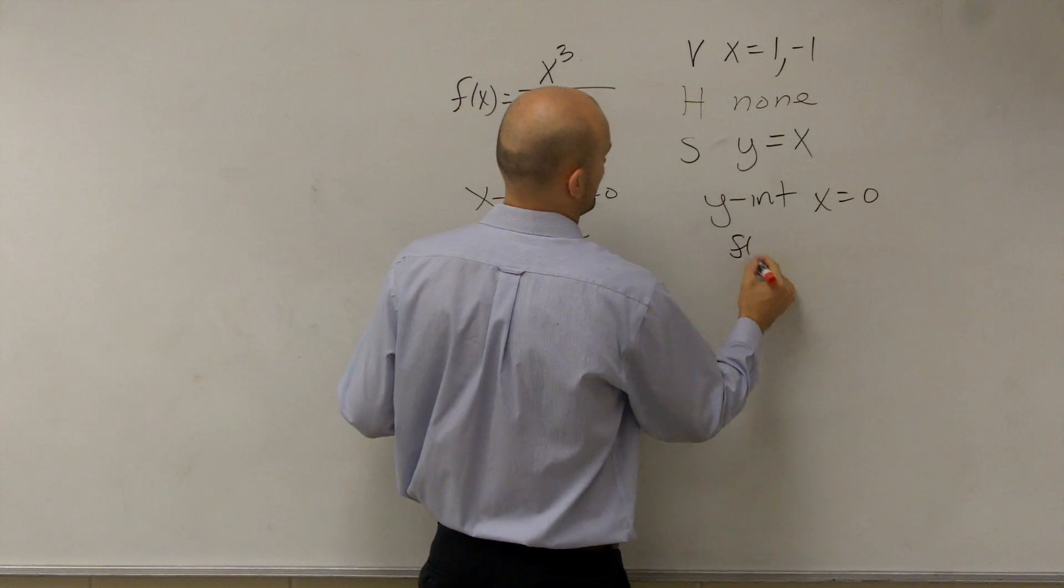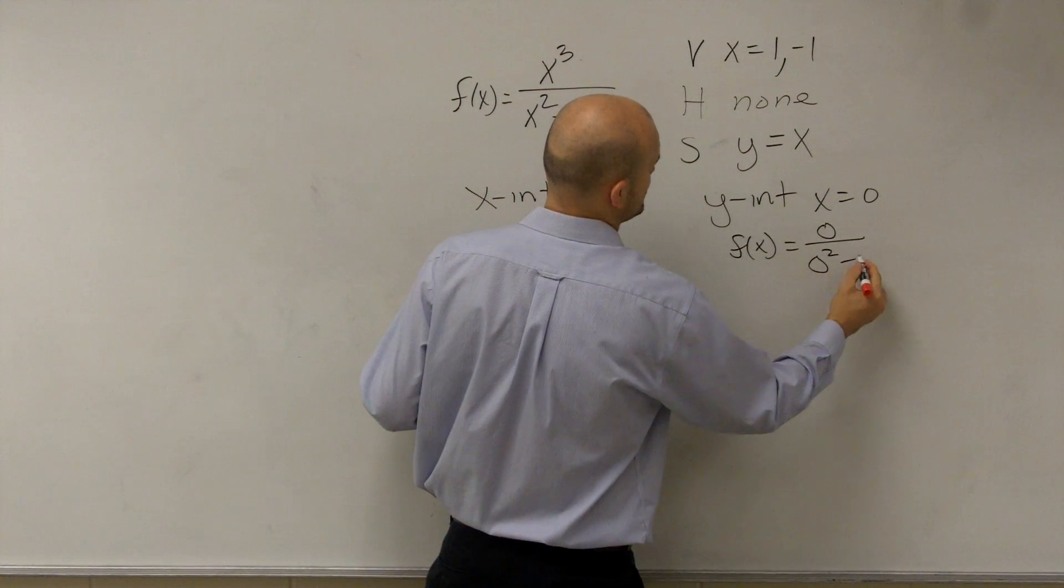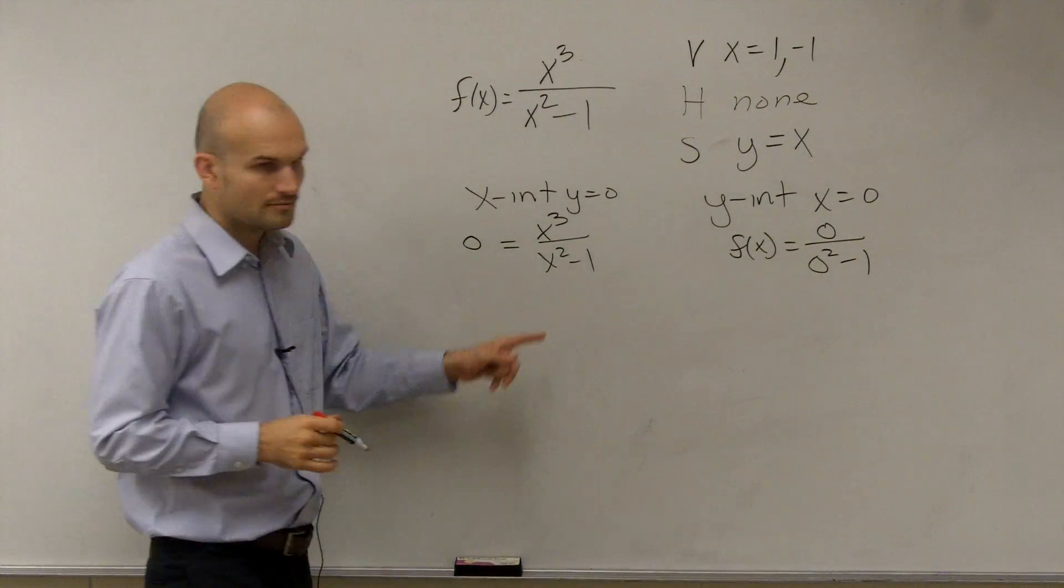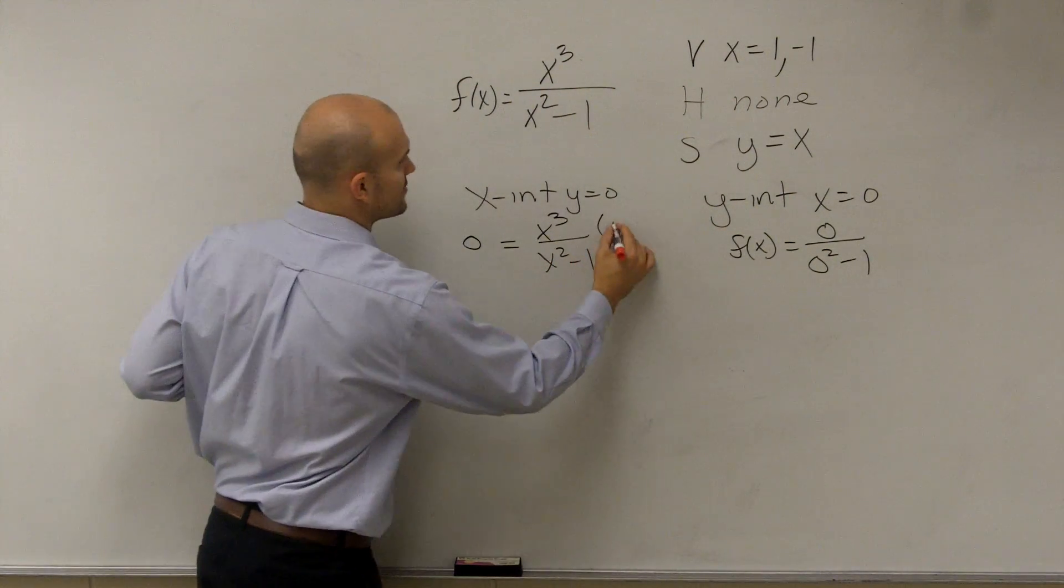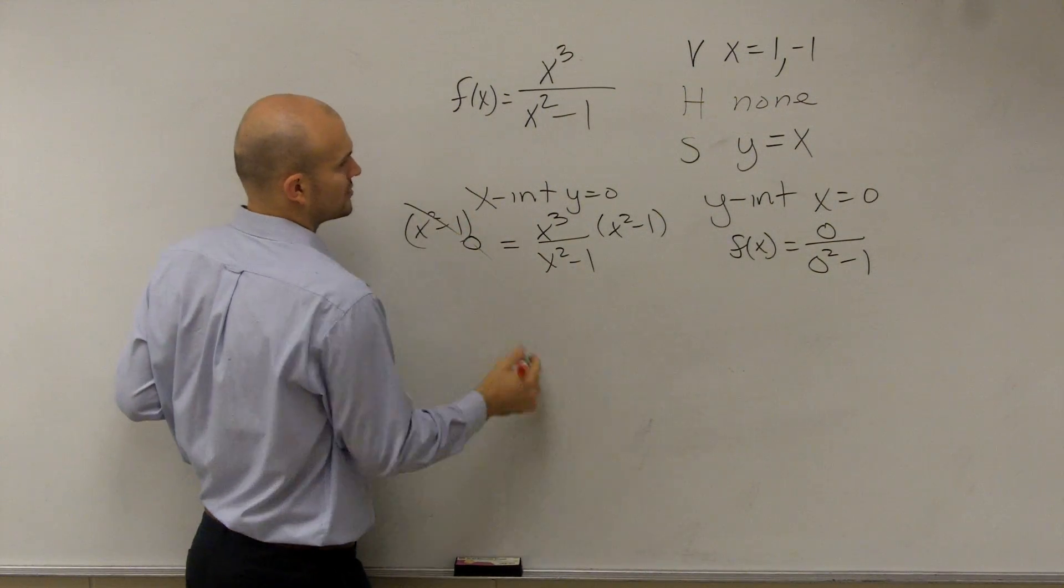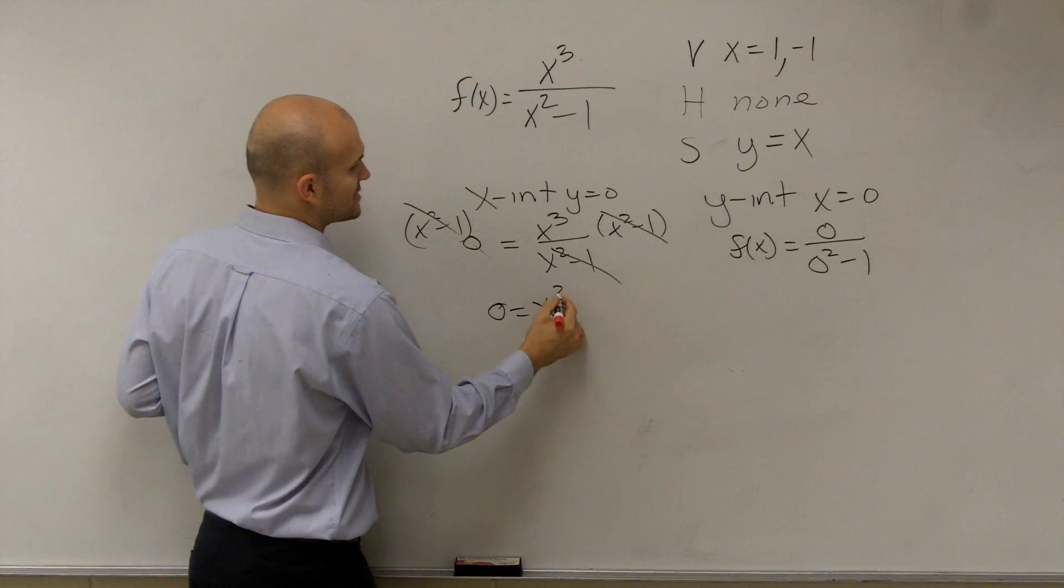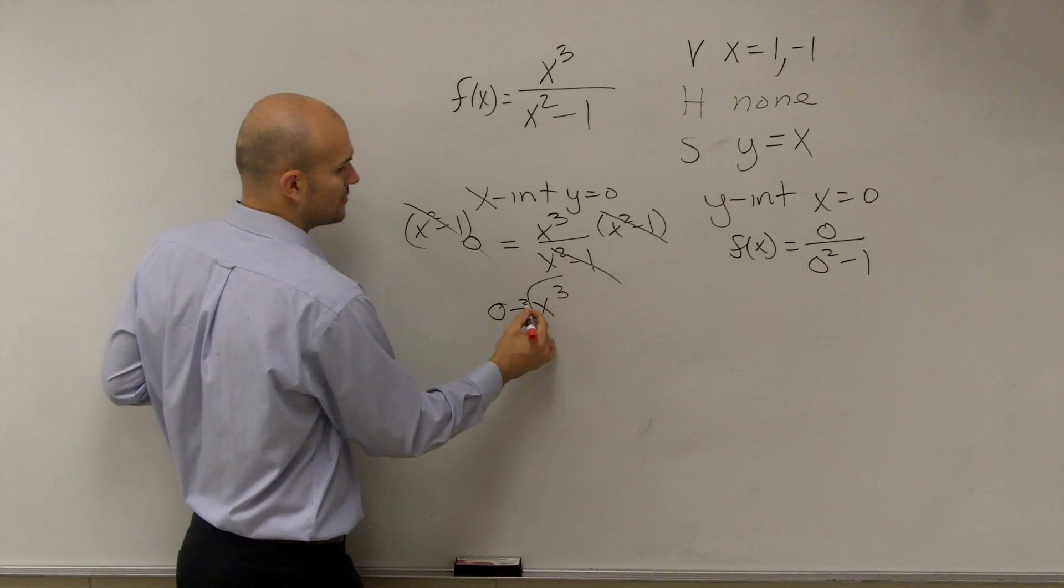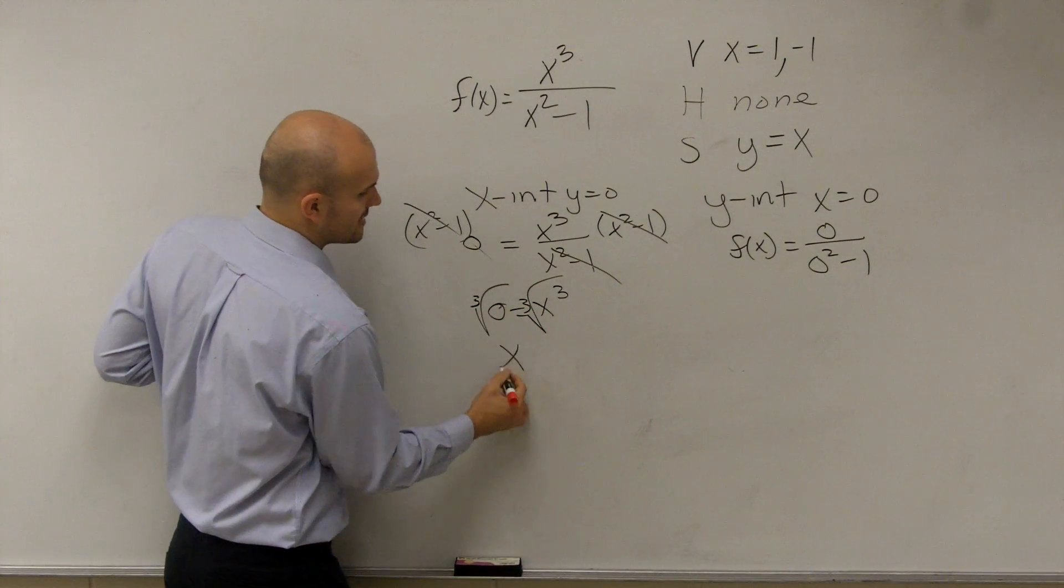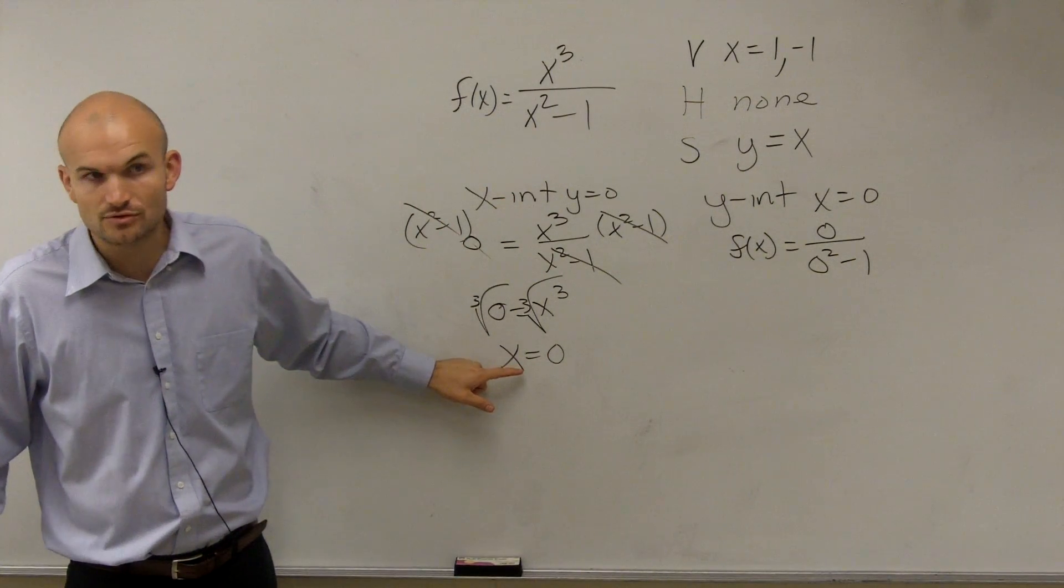So I have x cubed over x squared minus 1. Here we multiply by x squared minus 1 on both sides. So I'm left with 0 equals x cubed. Take the cube root on both sides, x equals 0.